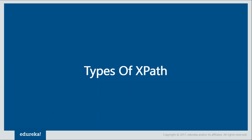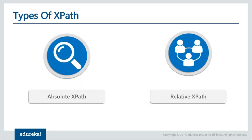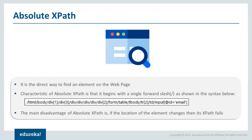There are two types of XPath: absolute XPath and relative XPath. An absolute XPath is the direct way to find an element on a web page. It starts with a single forward slash and always begins from the root element. One main disadvantage of absolute XPath is that if the location of the element changes, it is going to fail.